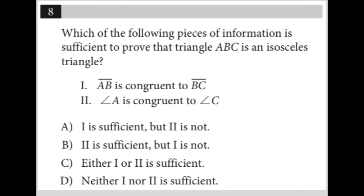This question asks which of the following pieces of information is sufficient to prove that triangle ABC is an isosceles triangle. Before looking at the answer choices, I'm going to remind myself of the rules for an isosceles triangle. In order to be an isosceles triangle, you have to have two congruent sides as well as two congruent angles.